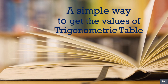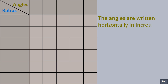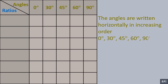A simple way to get the values of the trigonometric table. The angles are written horizontally in increasing order: 0 degree, 30 degree, 45 degree, 60 degree, 90 degree.